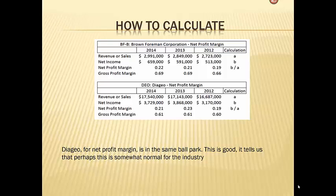Now we'll compare it to Diageo. Diageo is very similar — even though they are a much larger company in terms of revenue and in terms of net income, their margins come out to be about the same as Brown Foreman. They're keeping around $0.60 gross profit and they're keeping around $0.20 of net profit.